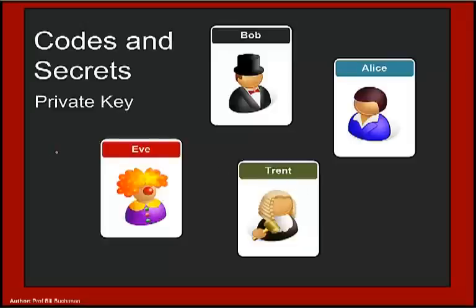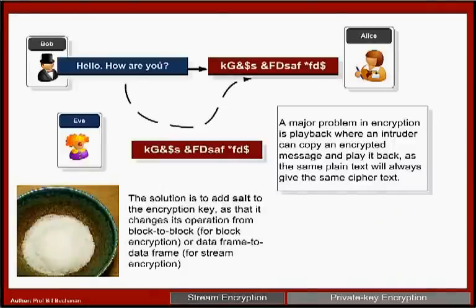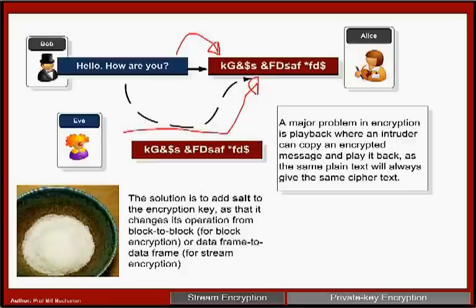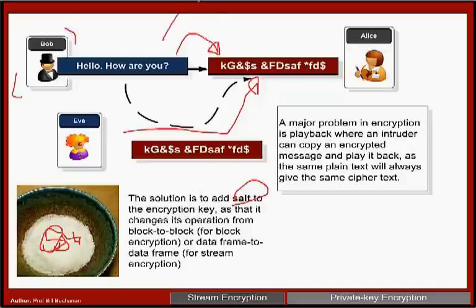We'll look at three main encryption methods: private key (symmetric), public key (asymmetric), and one-way hashing. A problem with any encryption is that if the same plaintext always produces the same ciphertext, Eve can replay the cipher to Alice, who will decrypt it as a valid message from Bob. To counter this, we add a little salt — randomisation — into the encryption process, ensuring the cipher produced changes each time.